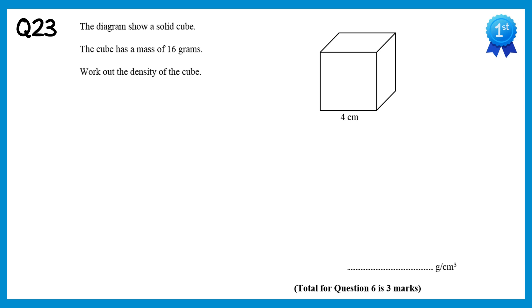In this question we're trying to find the density of the cube. You should know the formula density equals mass divided by volume. In the question we're told the mass of the cube, that's 16 grams, so we just need to find out the volume. Since it's a cube, the volume is just 4 times 4 times 4 again. This gives you 64 centimetres cubed. So now we have the mass and the volume, we can use the density formula. Mass divided by volume, so 16 divided by 64. If you simplify this down you'll end up with 1 quarter, which is the same as 0.25. So the answer is 0.25 grams per centimetre cubed.